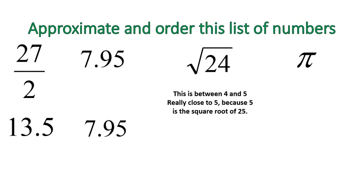Therefore it's between the numbers 4 and 5. Now, it's really close to the number 5 because 5 is the square root of 25. So you see, the square root of 24 would fit in there really close to the end, so I'm going to approximate it as 4.9. On my number line, that's where it would fit, about 4.9.